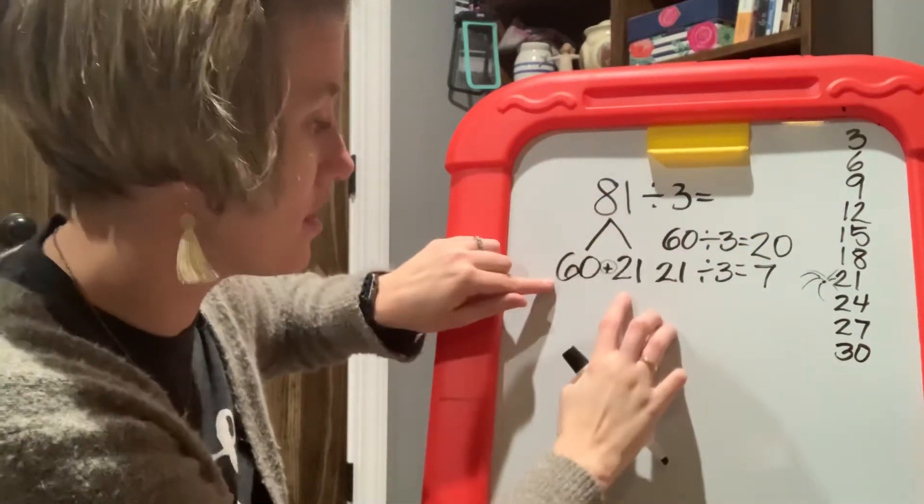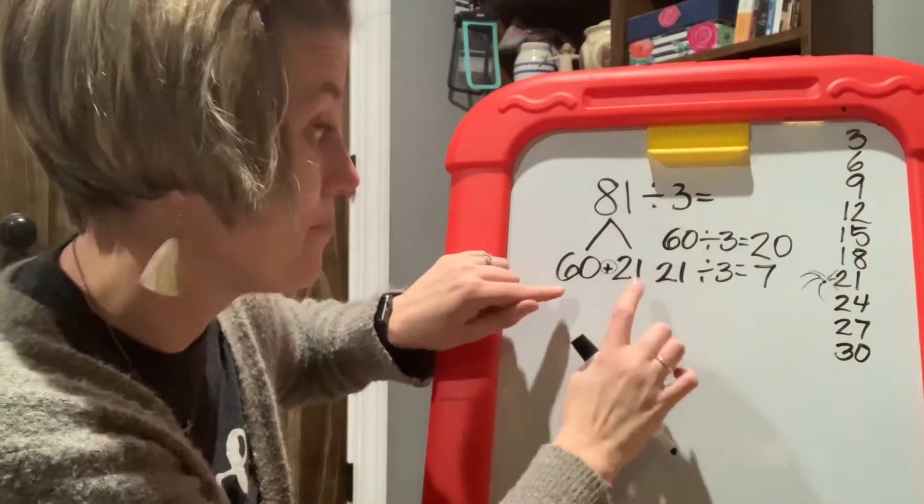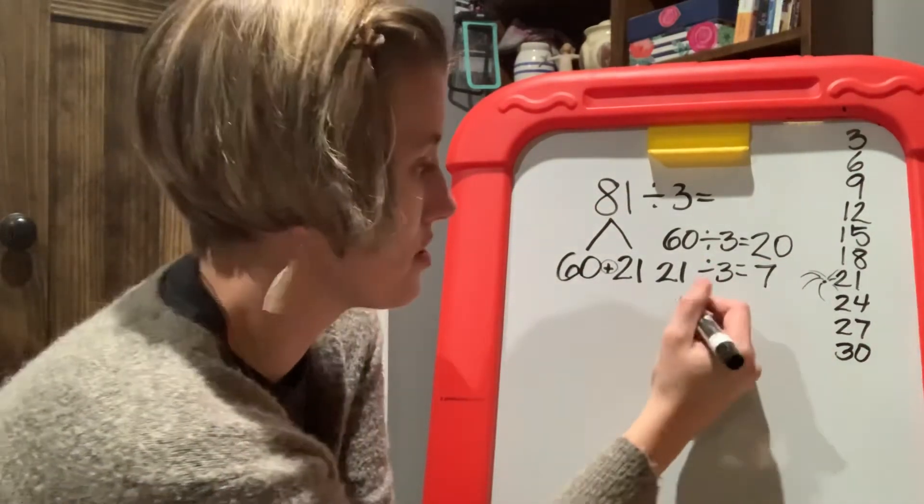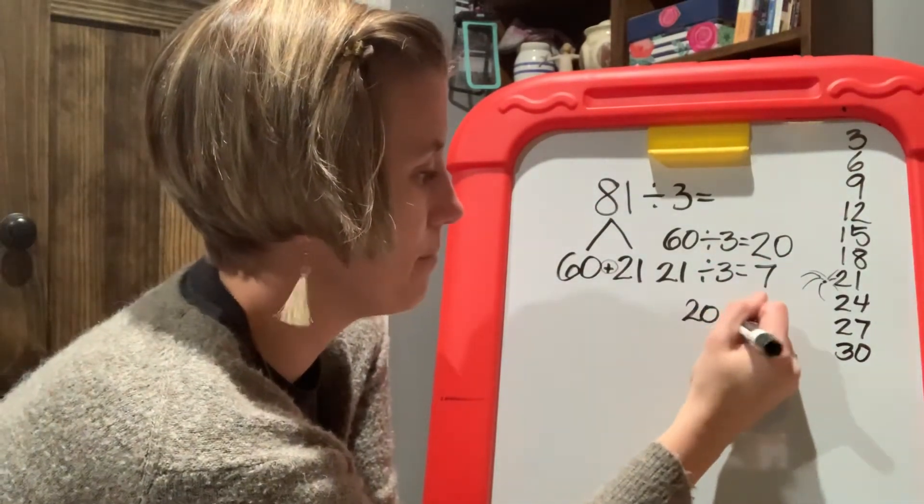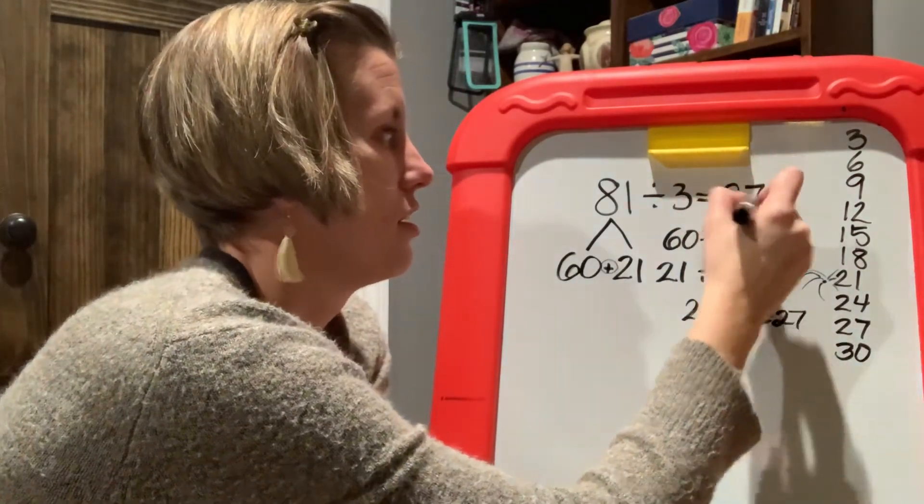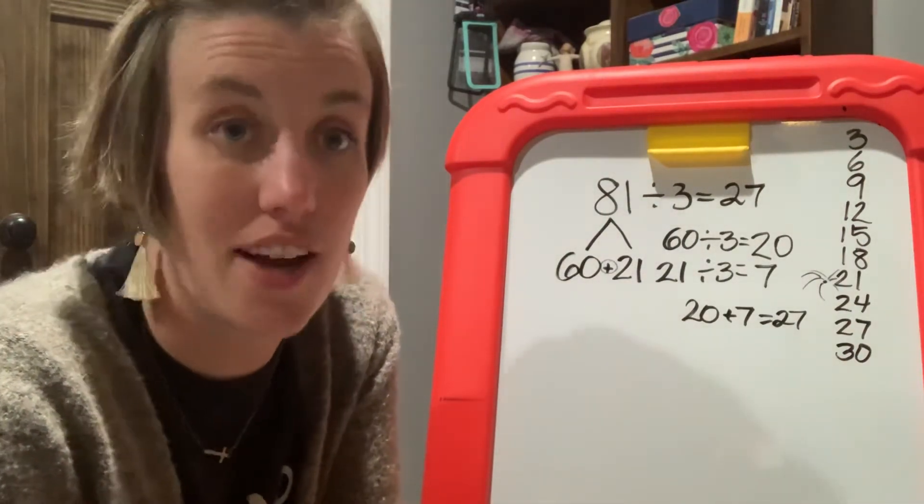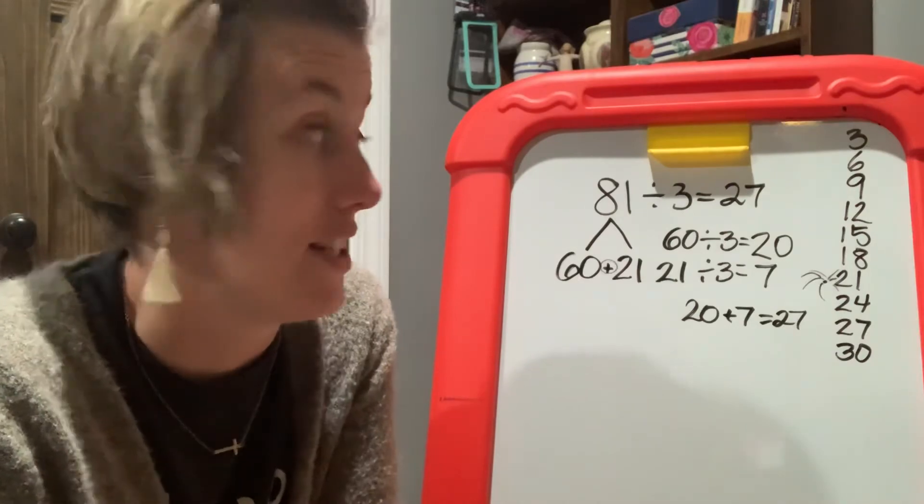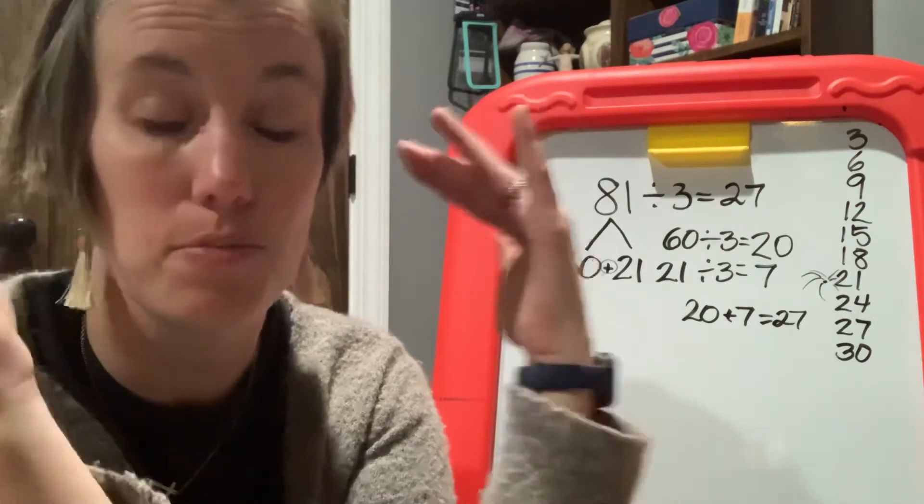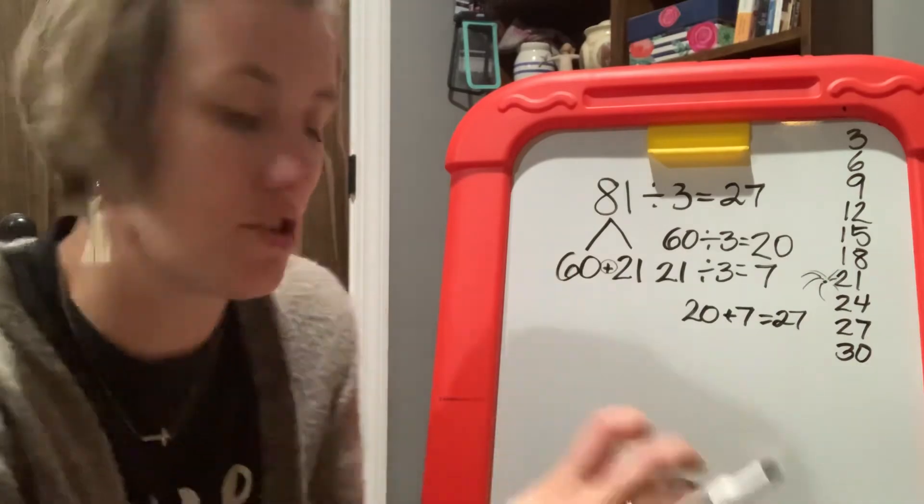we have distributed this number out into two separate things, two partial numbers that we put together to make the whole number. So what am I going to have to do with these partial quotients? I'm going to have to add them together to get my answer. 81 divided by three equals 27. That is how you divide using the distributed property, the listing of multiples and the gray matter between your ears. That is so beautiful. And my favorite part about you,